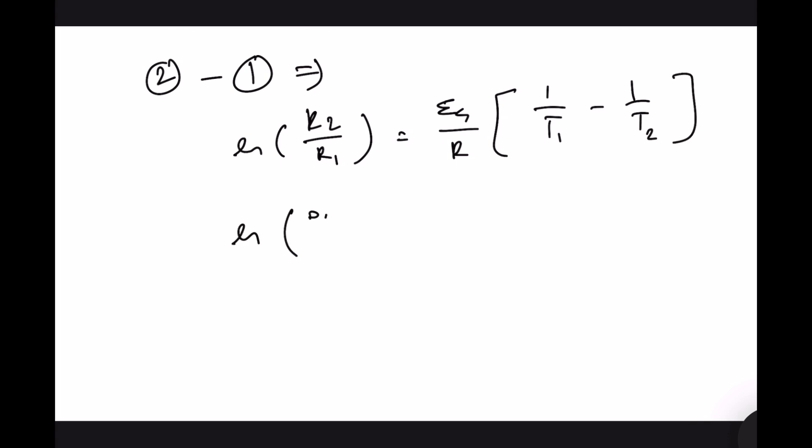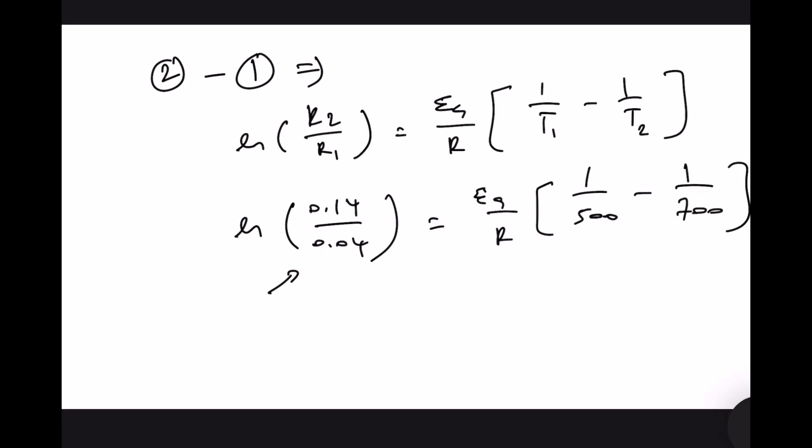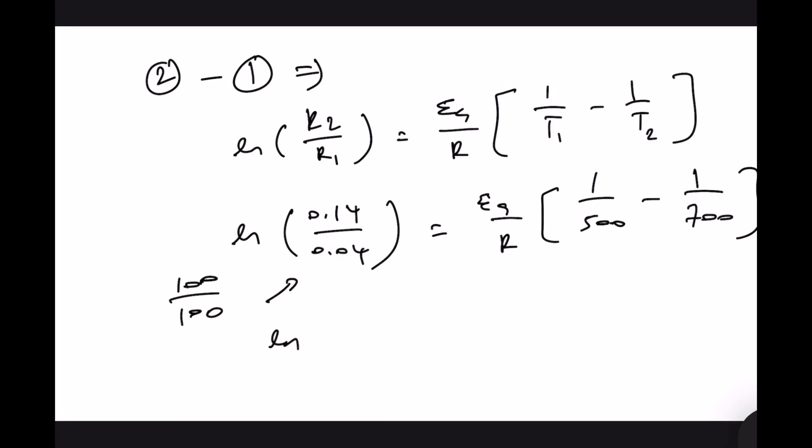Value of k2 is 0.14 k1 is 0.04 Ea by R T1 is 500 T2 is 700. Let us multiply both sides by 100. In that case this will be 14 by 4 divided by Ea by R this will be 200 divided by 500 into 700 and that will become 3.5.